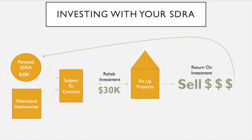The annual contribution limits in 2019 are $6,000 to your IRA if you're 49 or younger, and $7,000 a year if you're 50 or older. With this one real estate transaction, that self-directed retirement account grew five times the annual contribution amount — tax-free. I don't know many mutual funds that can produce a $30,000 gain in one year, let alone in 45 to 90 days like this fix-and-flip would normally take. This is how you accumulate wealth.